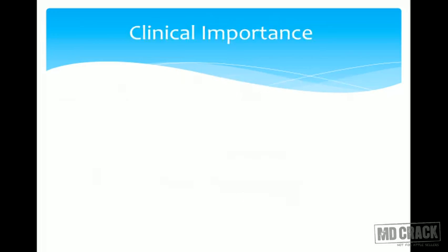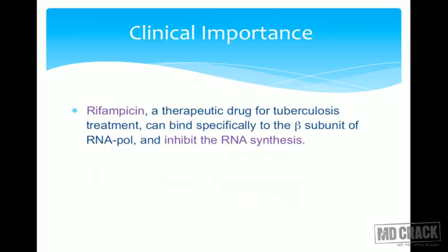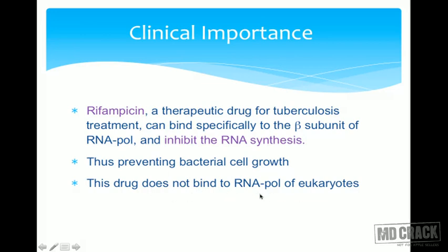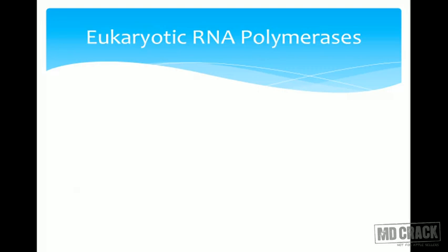An important clinical point: rifampicin, a therapeutic drug for tuberculosis, binds specifically to the beta subunit of bacterial RNA polymerase and inhibits RNA synthesis, thereby preventing bacterial cell growth. Critically, rifampicin does not bind to the RNA polymerase of eukaryotes, and therefore it does not harm the body's own tissues or disrupt transcription in normal eukaryotic cells.